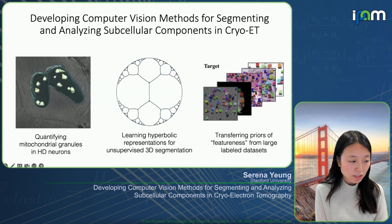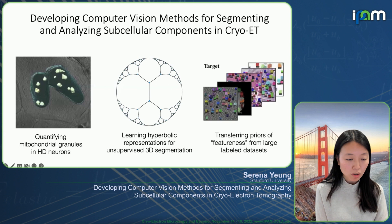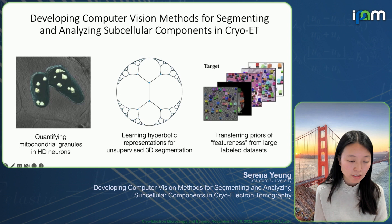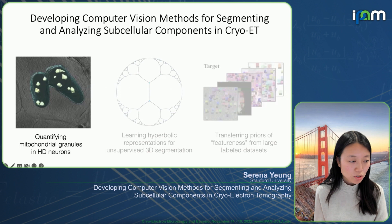Today I'd like to talk about some of our ongoing work in this direction. I'll start first by talking about one specific case where we developed computer vision methods to quantify and study mitochondrial granules in Huntington's disease neurons. Then I'll continue on to some of our ongoing work on methods that progressively reduce the amount of supervision and labels required, and how we can leverage other sources of data and priors when available.